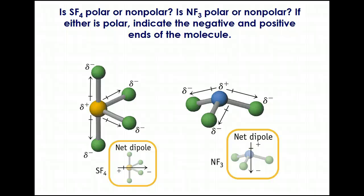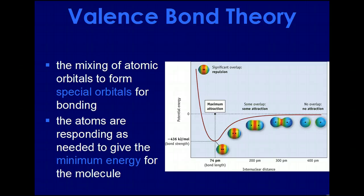There is one more part to this topic, and that's hybridization. The whole point behind hybridization is that orbitals will overlap because they will be a little bit more stable in terms of the geometry we see, and it reduces how much energy is needed for that molecule to form.